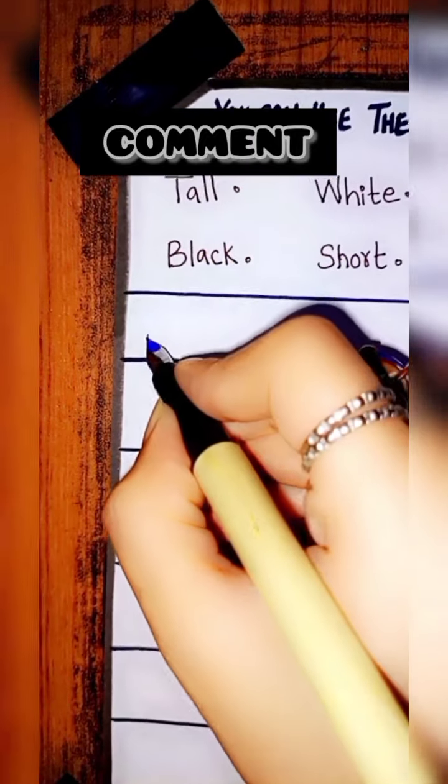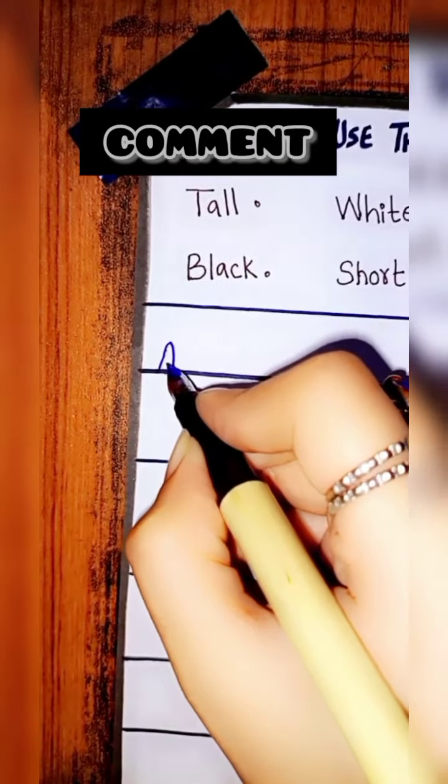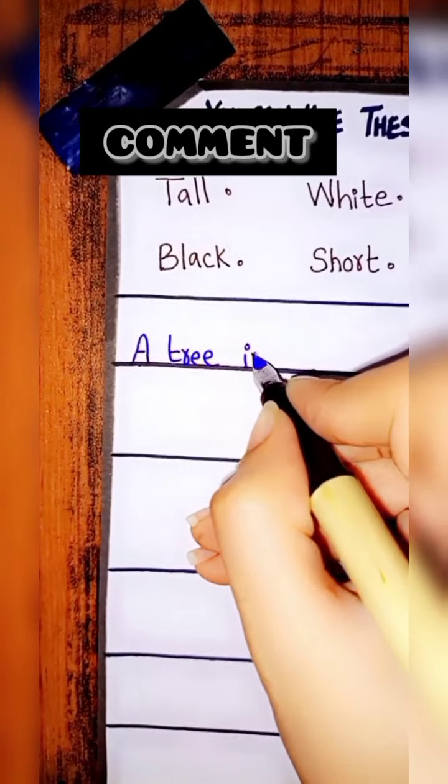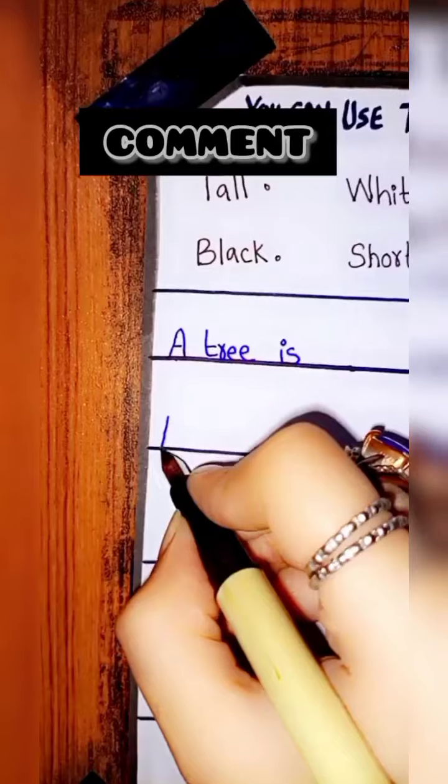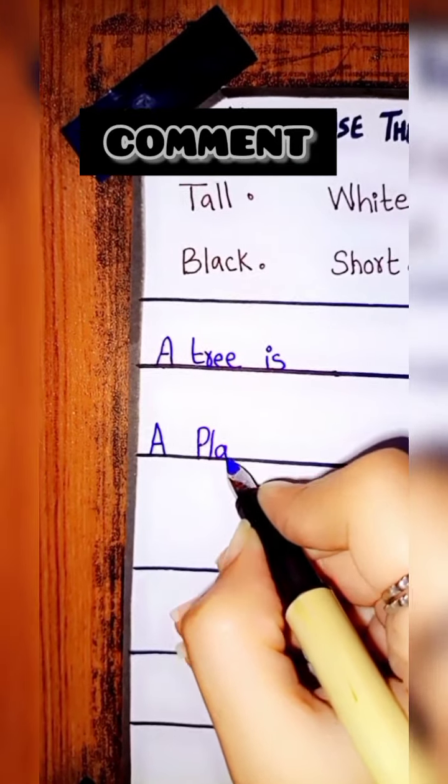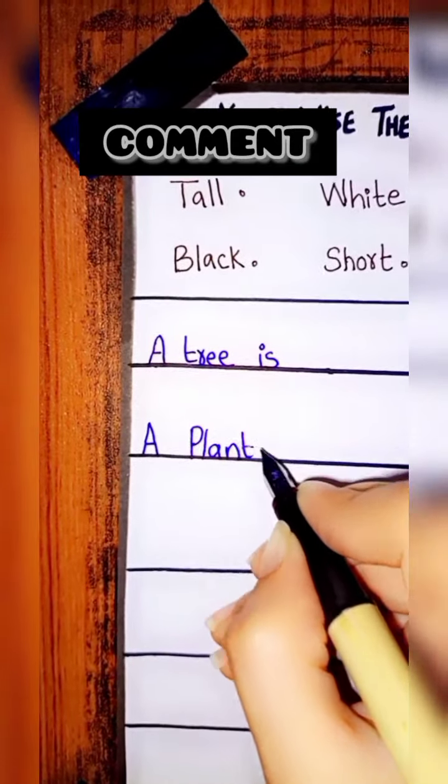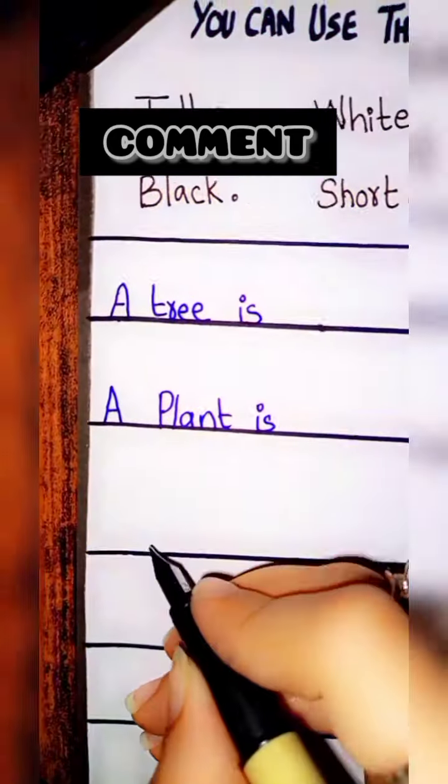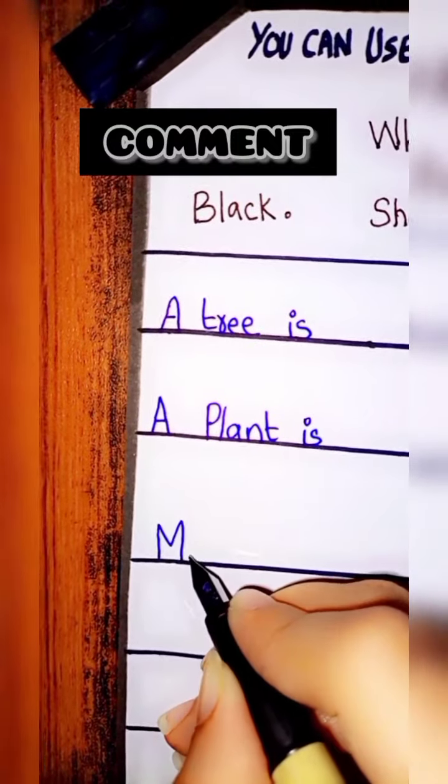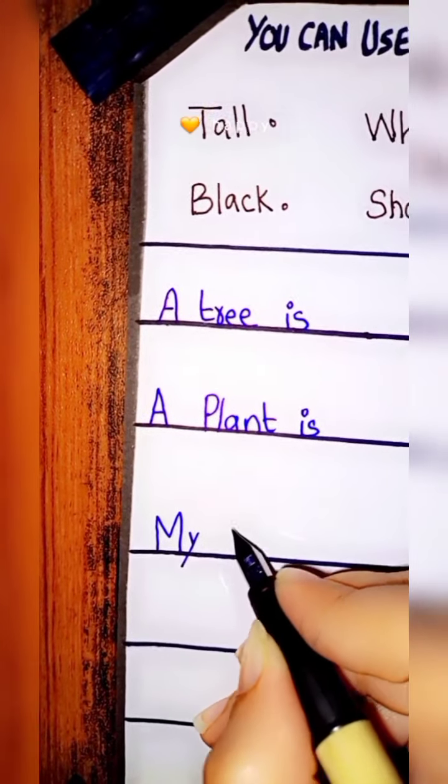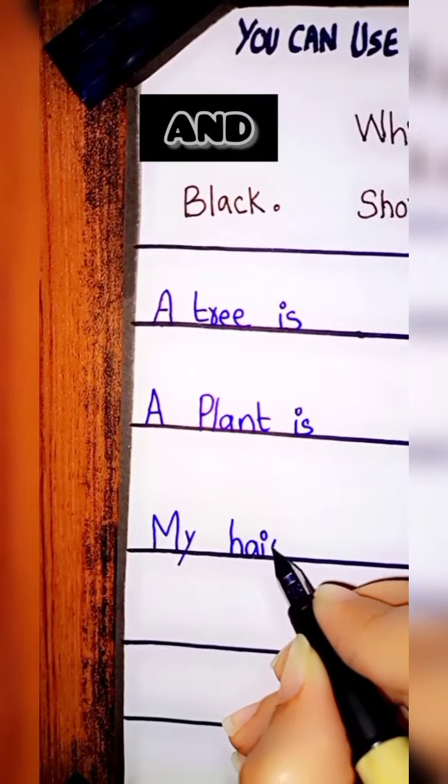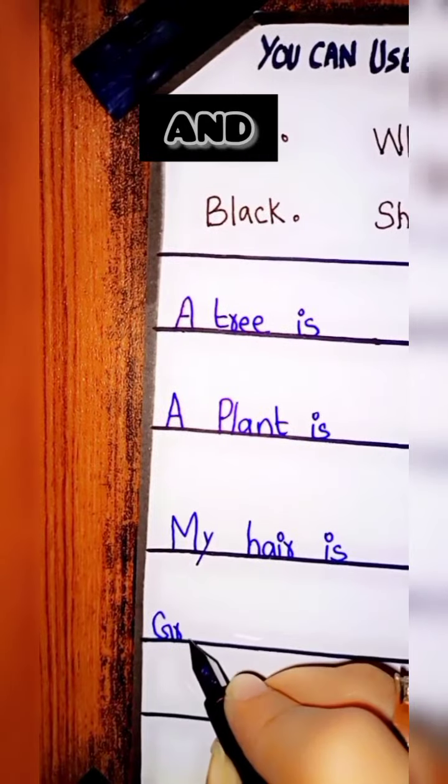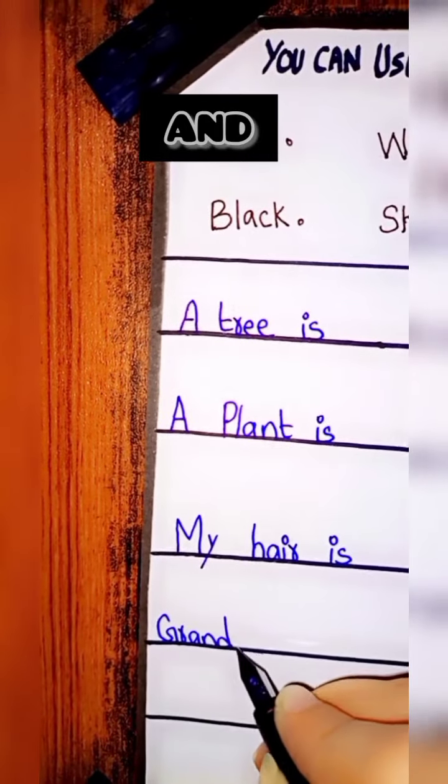In everything I will guide you. So now I will write a tree here and here I have to make a bracket, plant is. I have to make a bracket and then my hair is dash. Okay we will fill it and then now we are going to write grandmother's hair is okay.